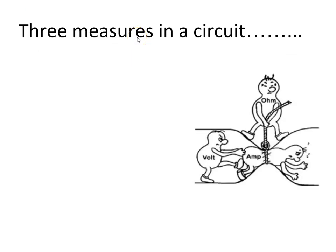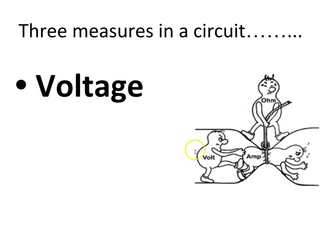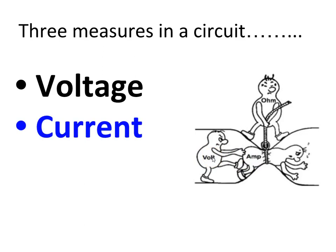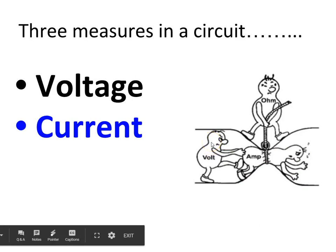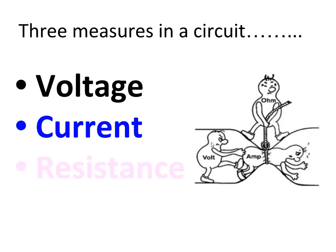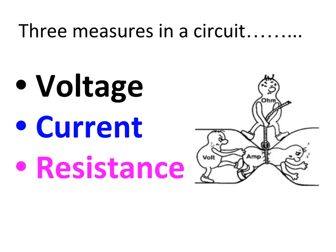Let's get back to the three measures in a circuit. We have voltage — Mr. Volt — the unit for voltage, and it's what pushes the current through the wires and through the circuit. The higher the voltage the more current goes through the circuit. And then we also have resistance. The more resistance there is, the harder it is for the current to go through the circuit and it will slow the current down. So those are the three measures or quantities that define how electricity works in a circuit.